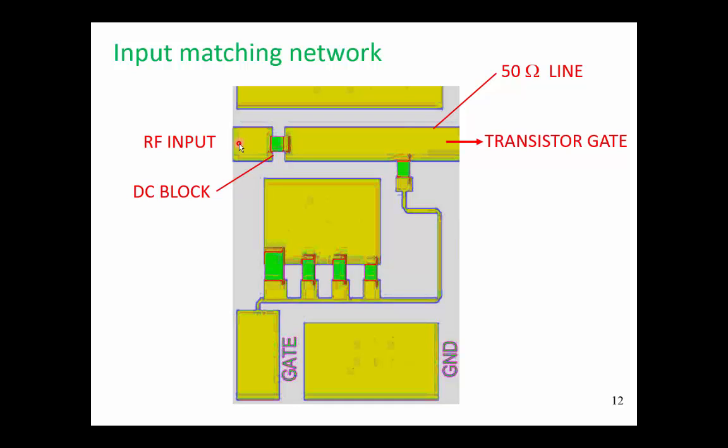Now some of the interesting things here are that we have lots of ground plane. We keep ground everywhere. There's no need to remove metal if we don't have to. So we have ground connection down here, and there are multiple vias to the backing substrate, which is attached to our metal carrier.